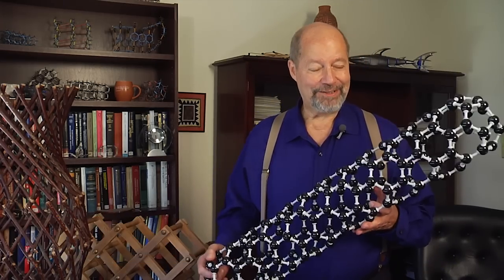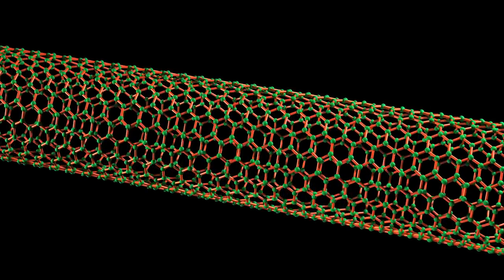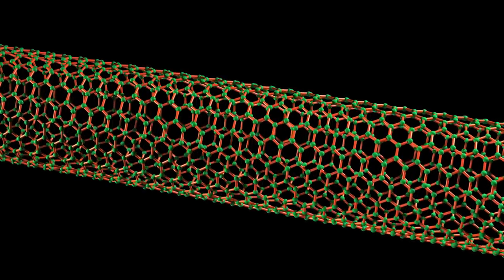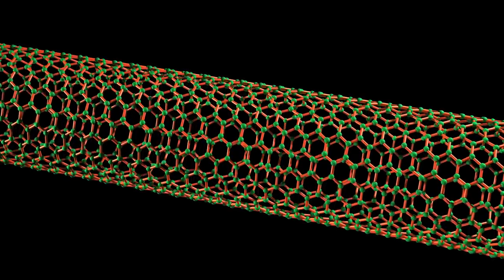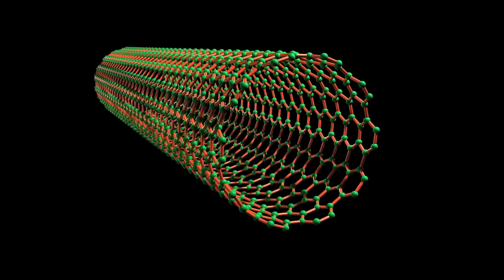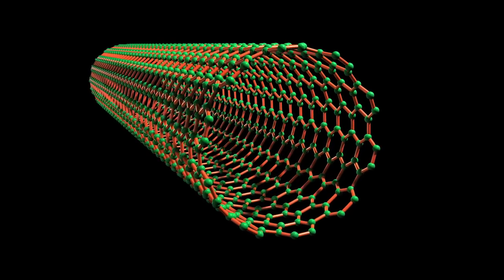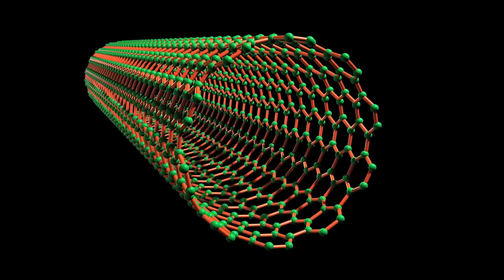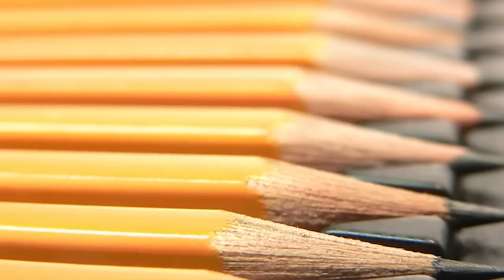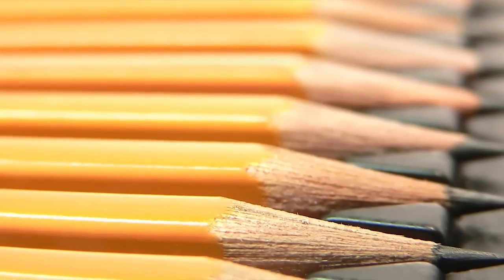My name is Ray Bachman. I'm director of the Nanotech Institute at the University of Texas at Dallas. Our new artificial muscles are based on carbon nanotubes. Carbon nanotubes are cylinders of carbon, and the particular type of carbon is the same type found in graphite, like in ordinary lead pencils.